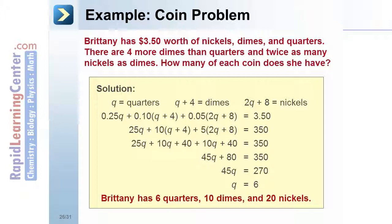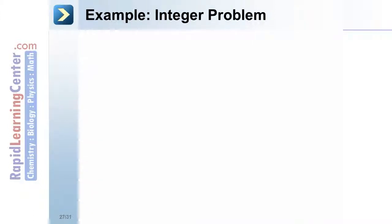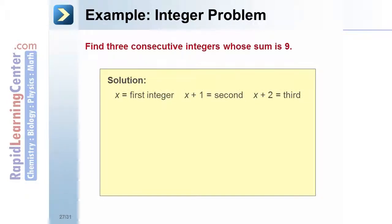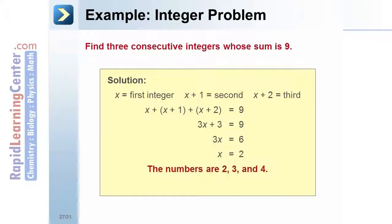Integer problem: find three consecutive integers whose sum is 9. Solution: let x be the first integer; x plus 1 is the second, and x plus 2 is the third. The equation is x plus (x plus 1) plus (x plus 2) equals 9. Combine like terms to get 3x plus 3 equals 9. Subtract 3, then divide by 3 to get x equals 2. The numbers are 2, 3, and 4. Adding them verifies the sum is 9.